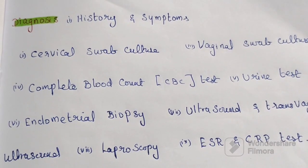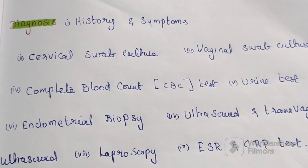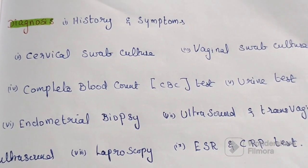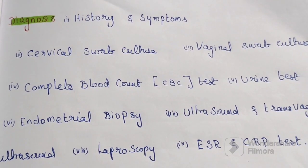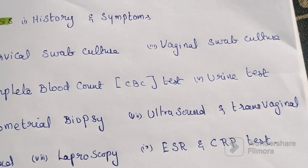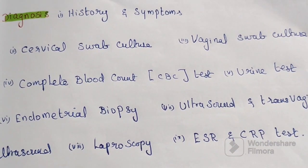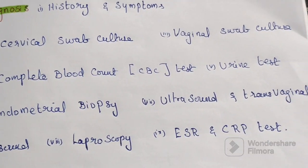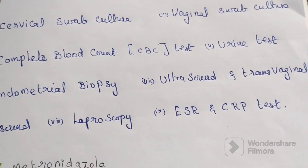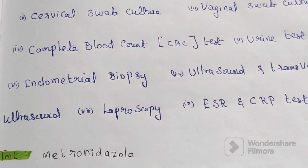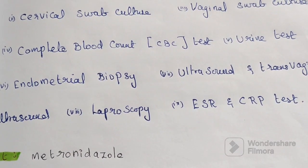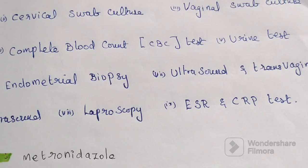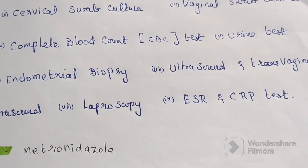The diagnostic tests used for pelvic inflammatory disease include history and symptoms assessment, cervical swab culture, vaginal swab culture, complete blood count, urine test, endometrial biopsy, ultrasound, transvaginal ultrasound, laparoscopy, ESR — erythrocyte sedimentation rate — and CRP, the C-reactive protein test.